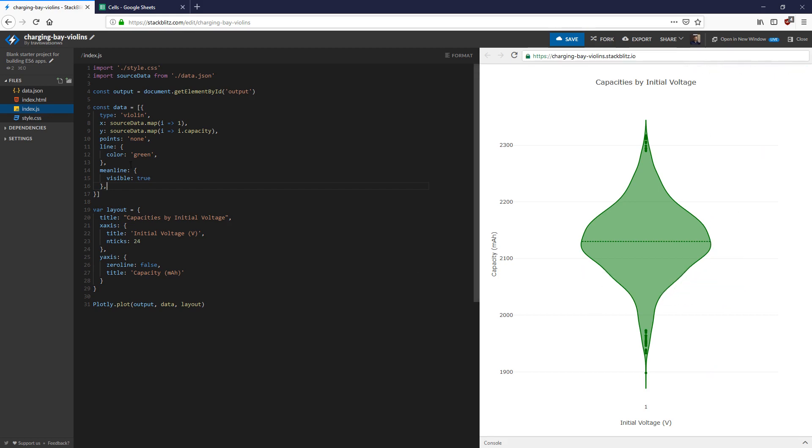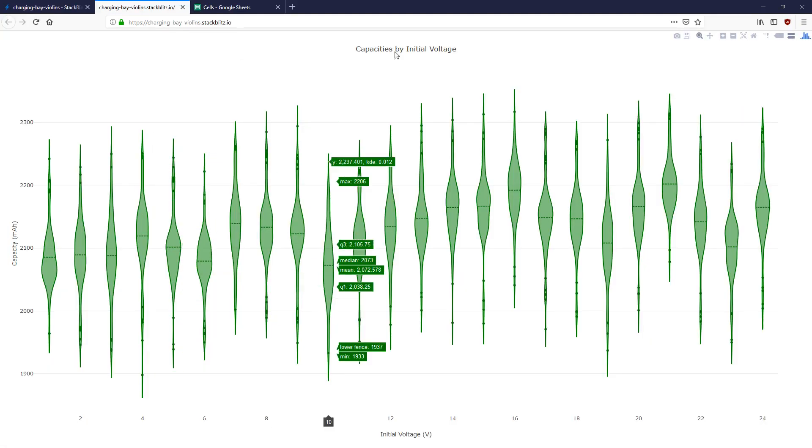And then we can start exploring this a little bit. This is all cells tested, so let's separate by the bay. And you'll see really recognizable patterns there.